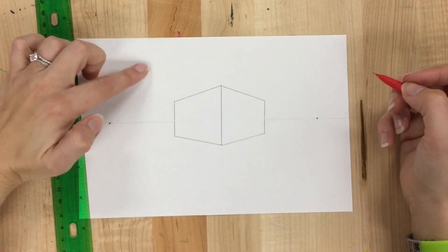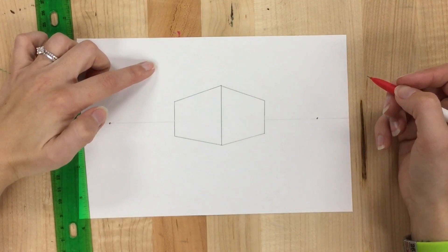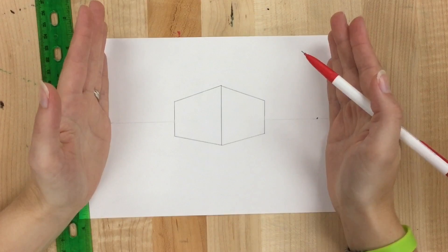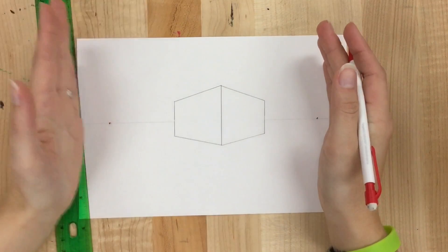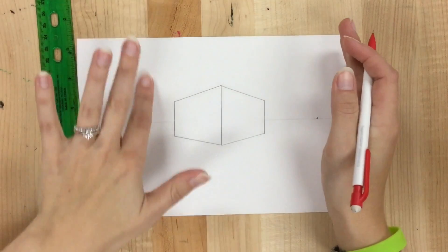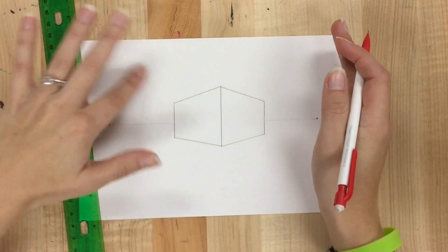Next I'm going to do one that goes above the horizon line. My corner needs to stay within my two vanishing points though, so nothing over here and nothing over here. So I'm going to put my corner kind of up here.